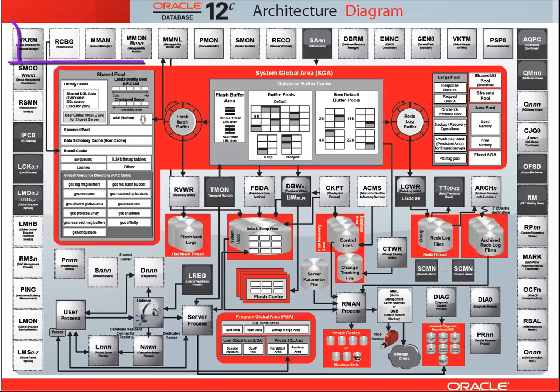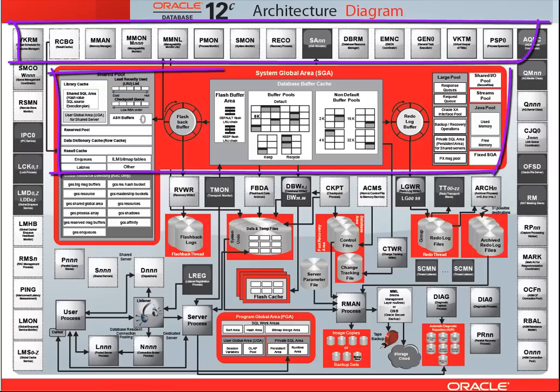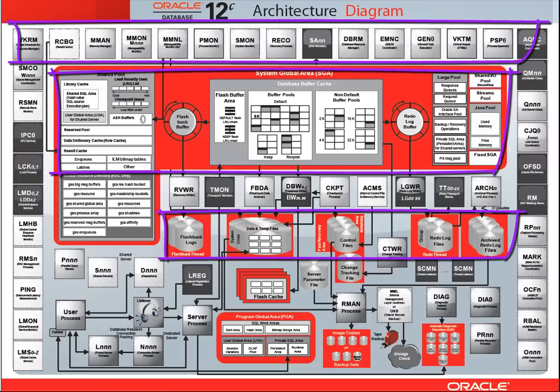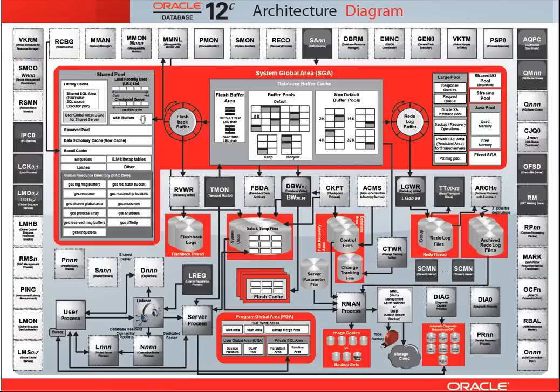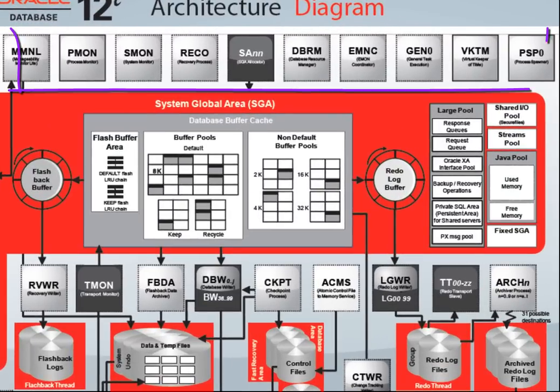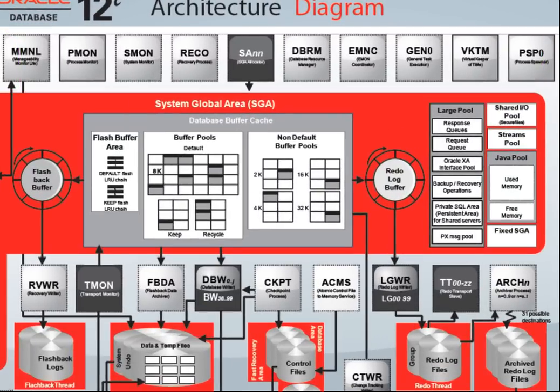This diagram shows you the main processes, memory and file structures used by a 12c version of an Oracle database and its associated instance. Square elements represent Oracle processes, which can either run as OS processes or OS threads. If an Oracle process is surrounded by dotted lines on this graphic, it means it can run either as an OS thread or an OS process. If surrounded by solid lines, it can only run as an OS process.